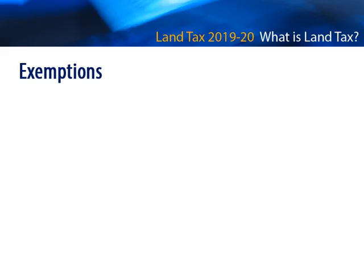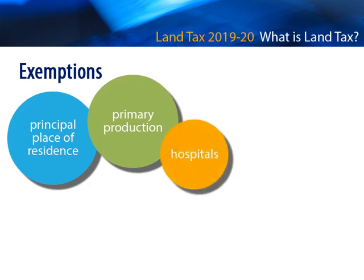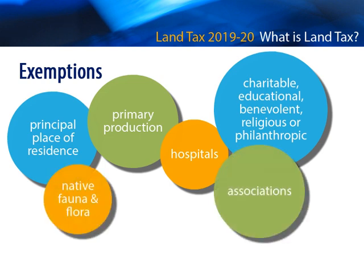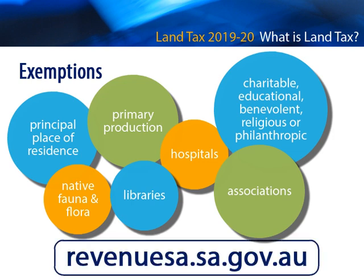A number of exemptions from land tax are available. For example: principal place of residence, primary production, hospitals, charitable, educational, benevolent, religious or philanthropic, native fauna and flora, and associations and libraries. While some exemptions will automatically be raised based on the land use of the property as determined by the Valuer General, others require an application. Further information regarding land tax exemptions is available on revenuesa.sa.gov.au.